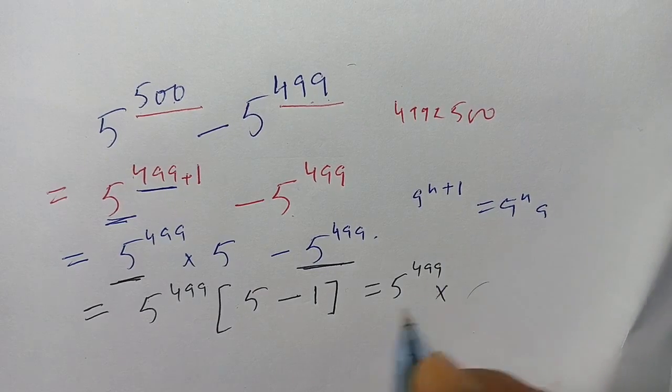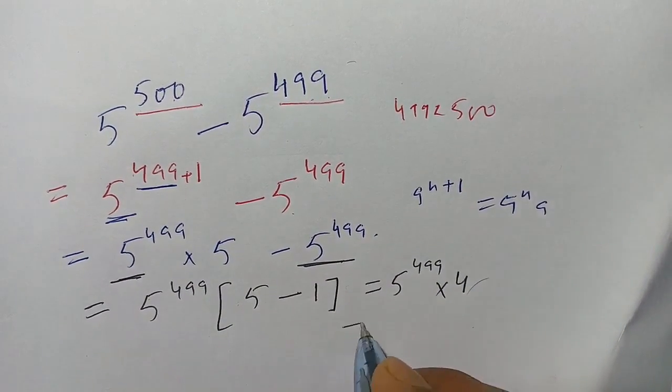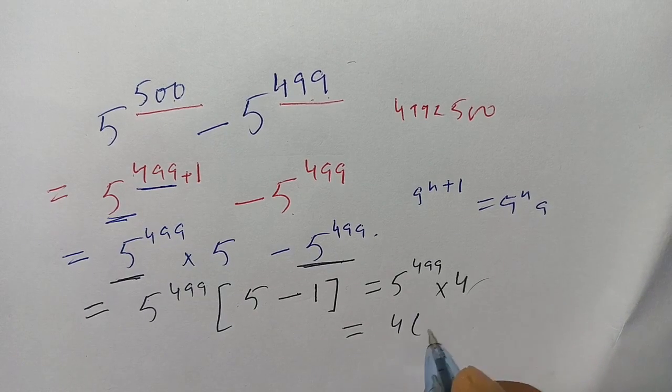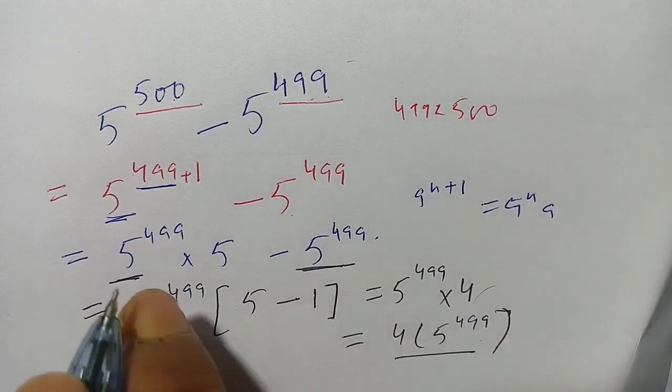We get 5 power 499 times 5 minus 1, which becomes 4. This becomes 4 times 5 power 499. This is the simplest form of this exponential problem.